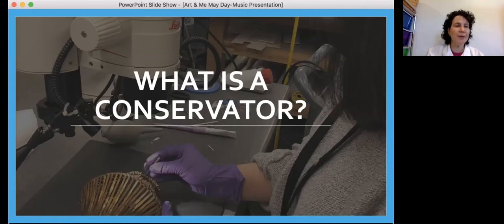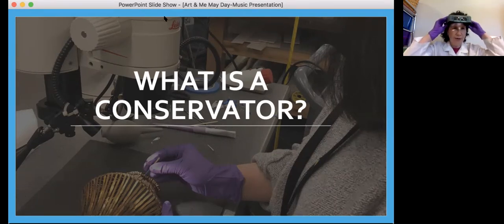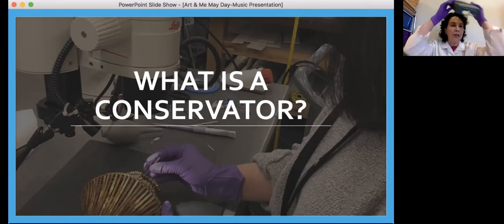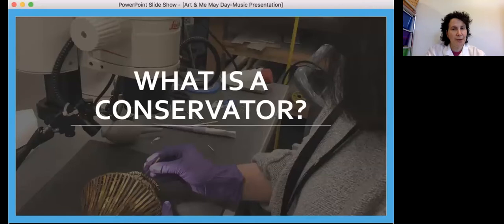There's one other thing you might notice in this picture that tells you a lot about what we do. On the top, it's a microscope. Sometimes we wear ones on our heads called Optivisors. These help us magnify so we can look closely because the first thing we do with any object is look really closely so we can understand what's going on with it, just like when the doctor comes to look at you.